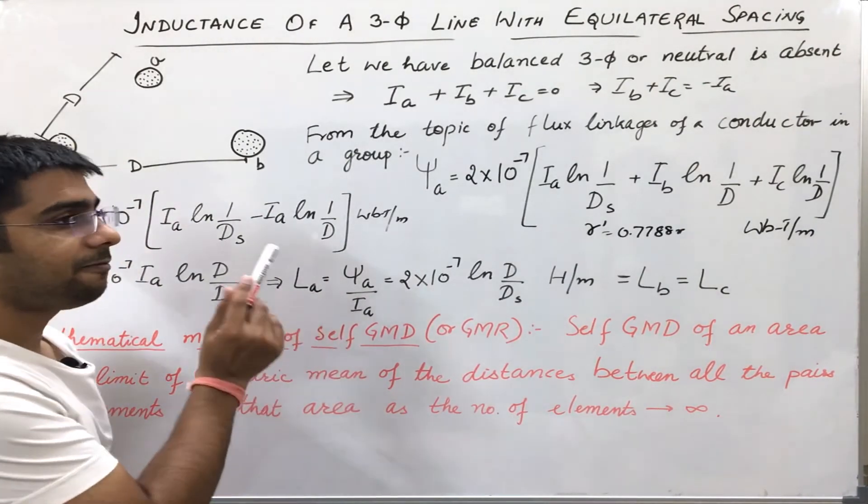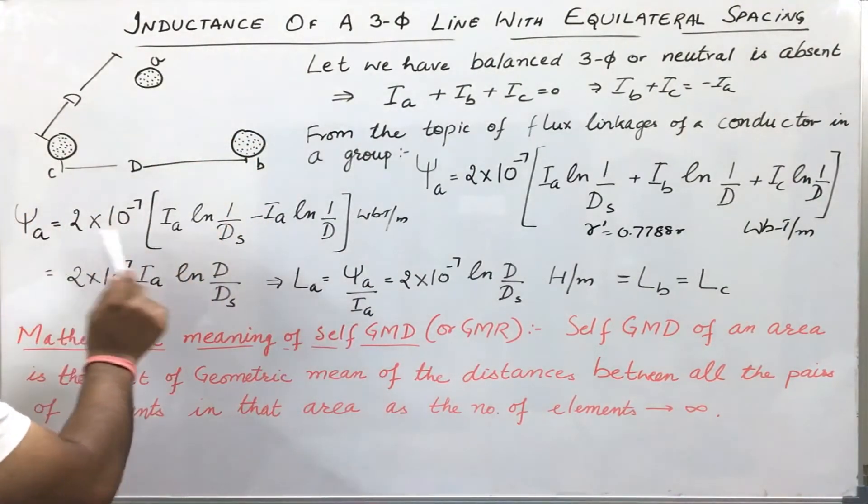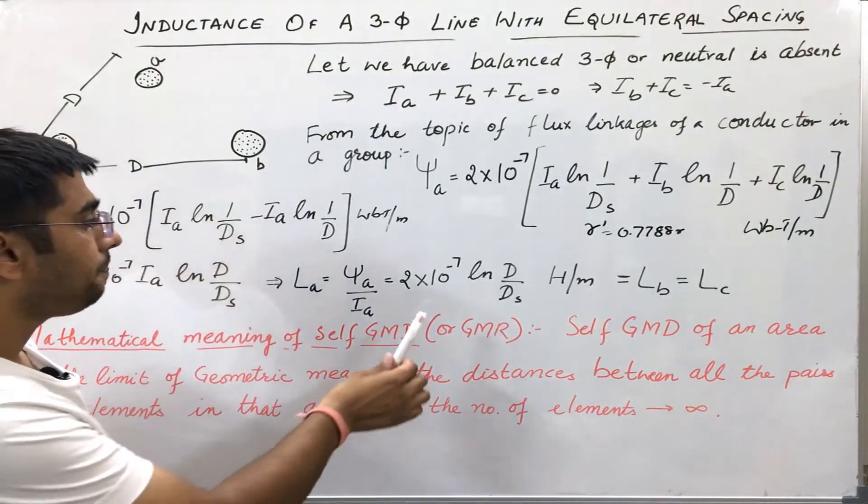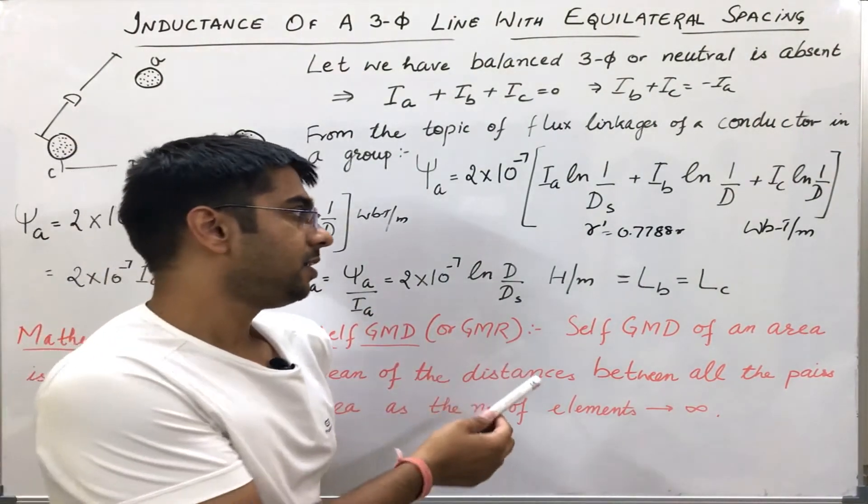So, I will find the inductance of phase A here by simply dividing psi A by Ia, which is simply 2 times 10 to the power minus 7 natural log d by ds.